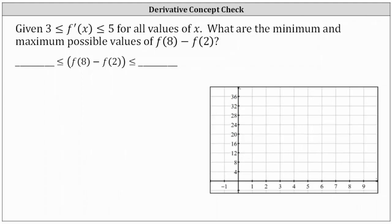We are given that f prime of x is greater than or equal to 3 and less than or equal to 5 for all values of x. What are the minimum and maximum possible values of f of 8 minus f of 2?